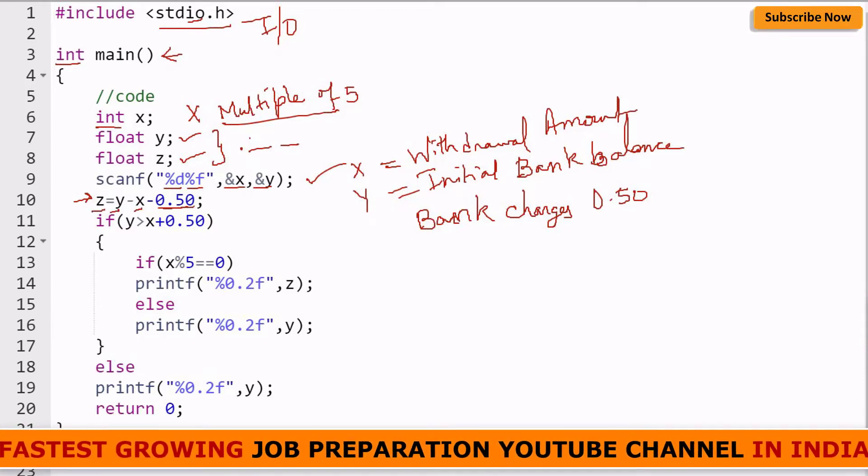We have subtracted from the initial bank balance the withdrawal amount and the 50 cents charged by the bank. This value is stored in z. Now we will check if z is a positive value or a negative value.